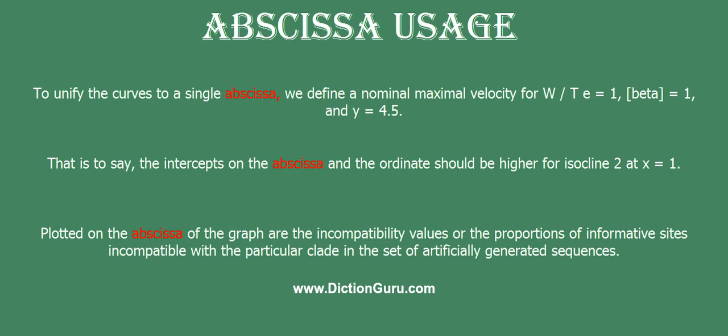That is to say, the intercepts on the abscissa and the ordinate should be higher for isocline 2 at x equals 1. Plotted on the abscissa of the graph are the incompatibility values, which are the proportions of informative sites incompatible with a particular clade in the set of artificially generated sequences.